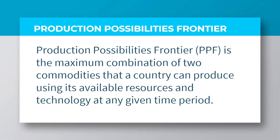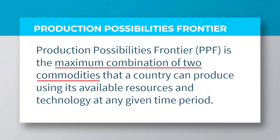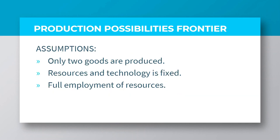From this definition, you should take notice of two key phrases. These phrases basically underlie the assumptions of the production possibility frontier. The first one is that only two goods are produced in that country. The second is resources and technology is considered to be fixed. And the third one is that resources are fully employed.